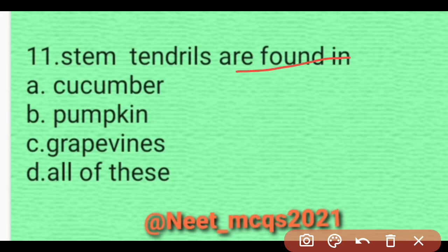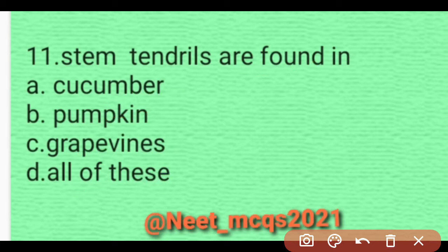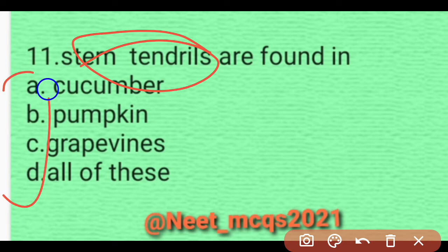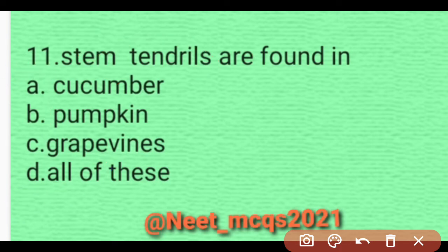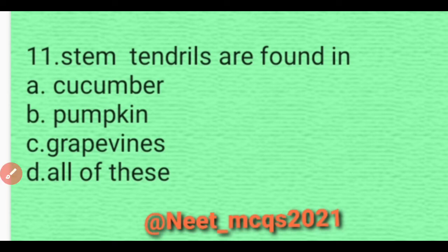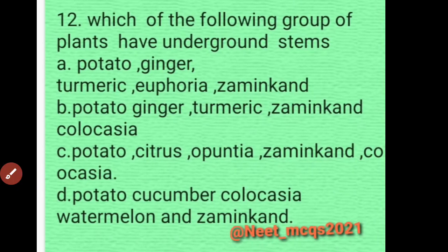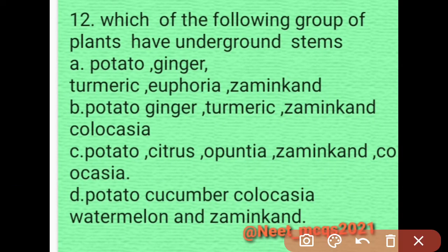Question 10: Stem tendrils are found in — cucumber, pumpkin, grapevines, or all of the above? Stem tendrils are basically found in all of the above. So option D is correct.